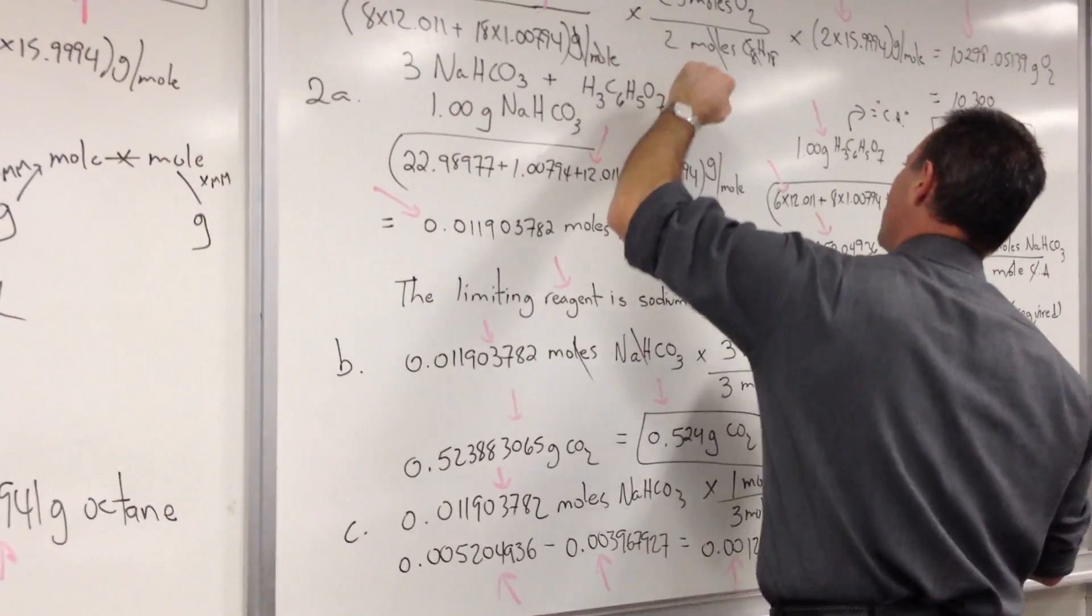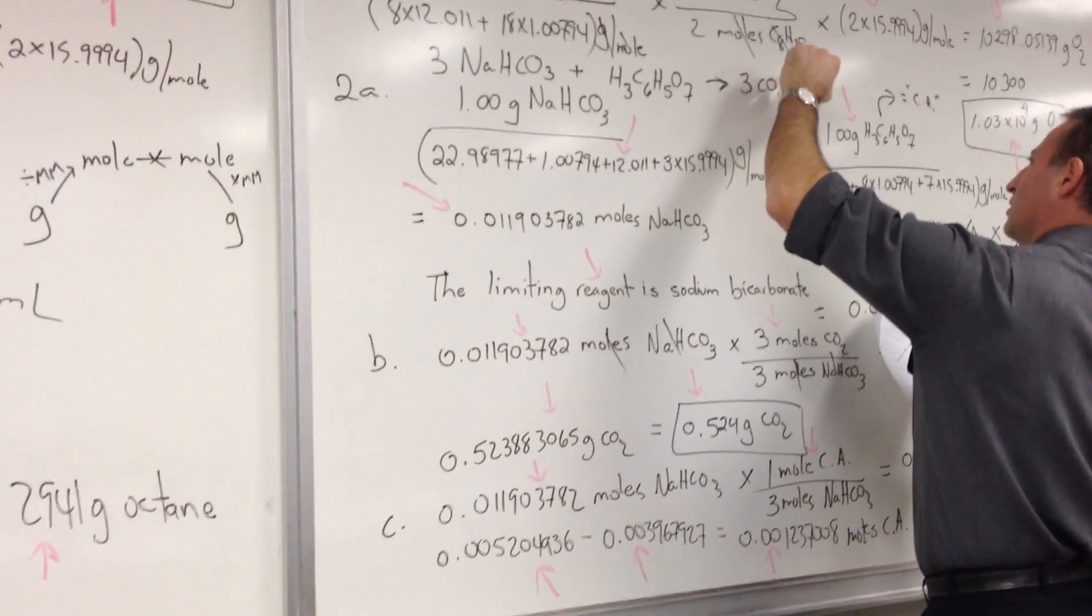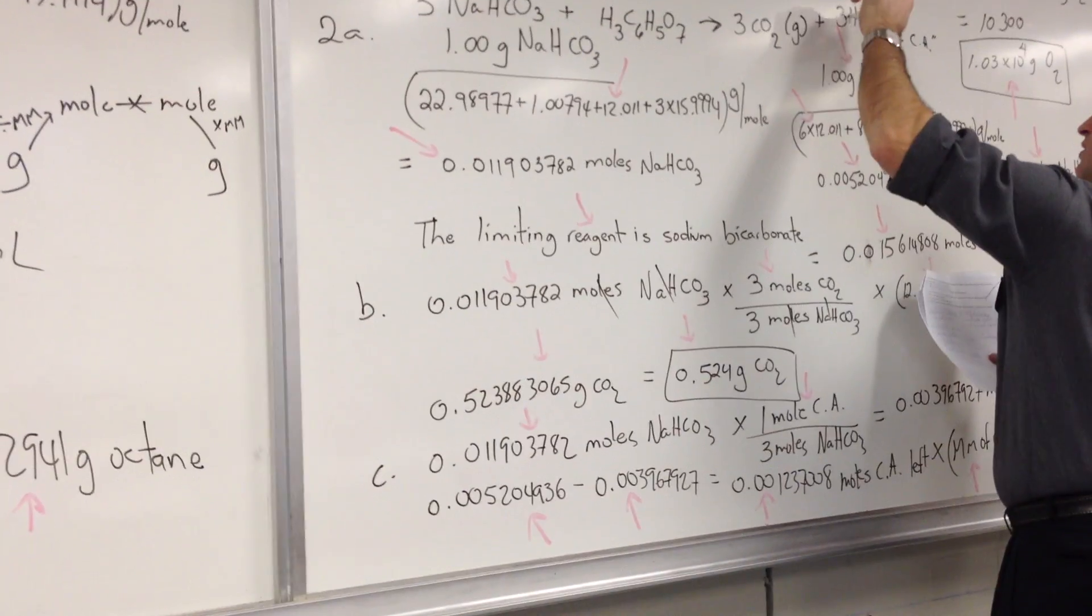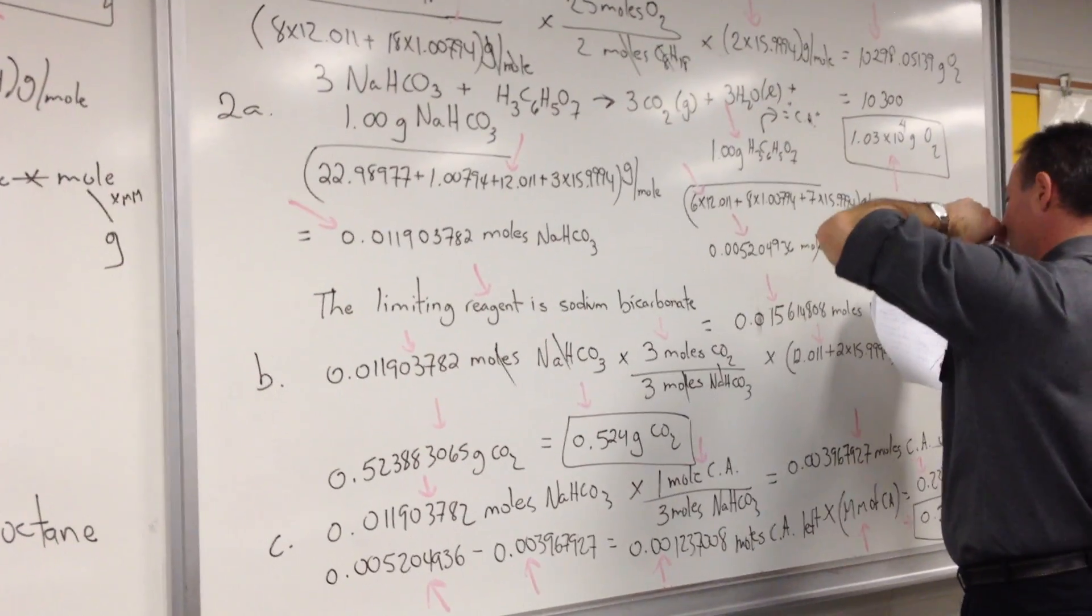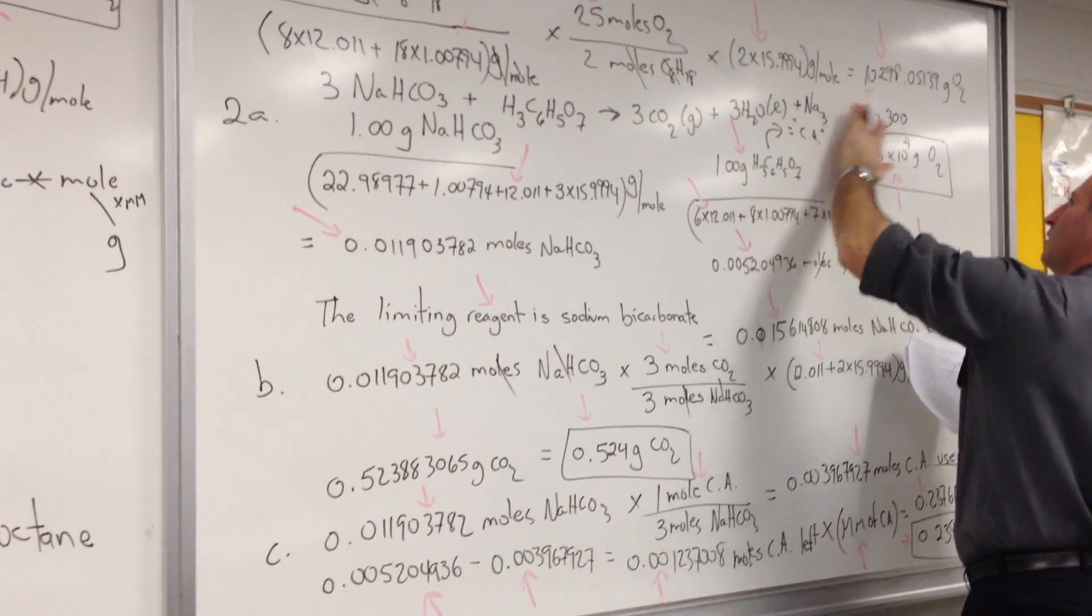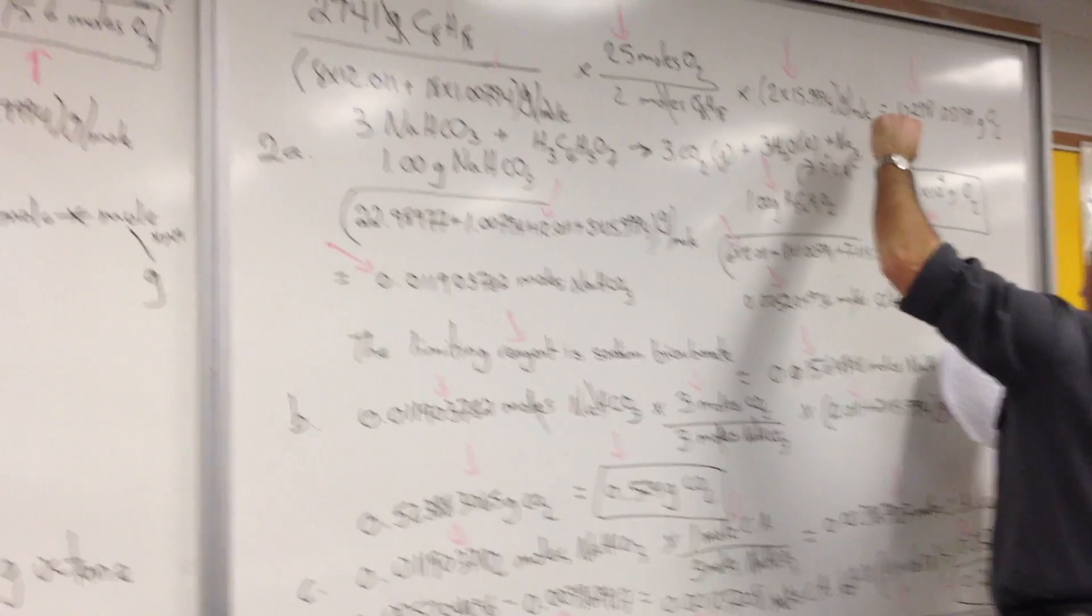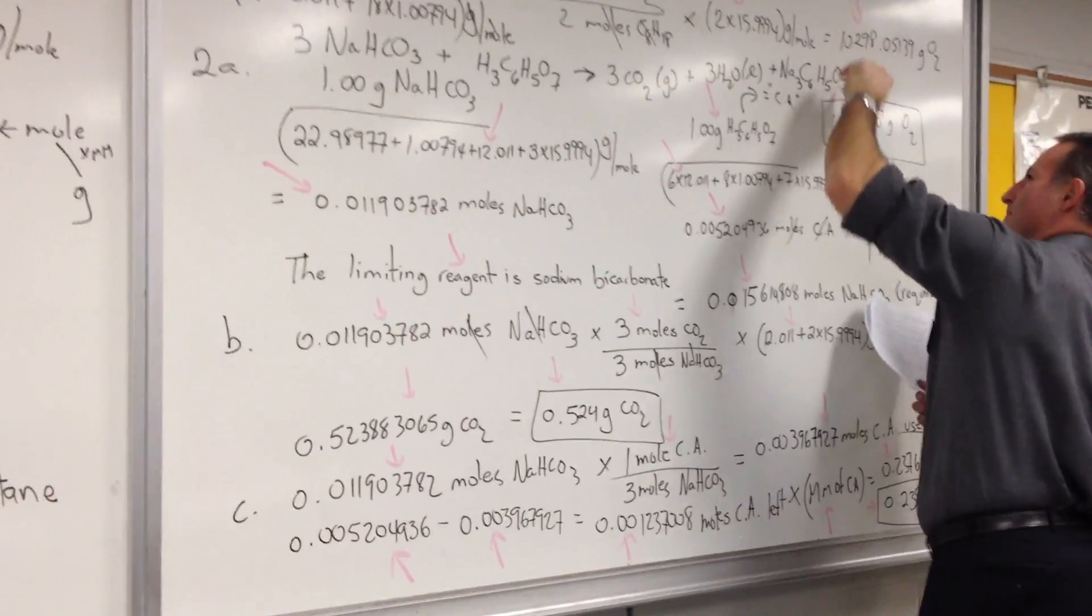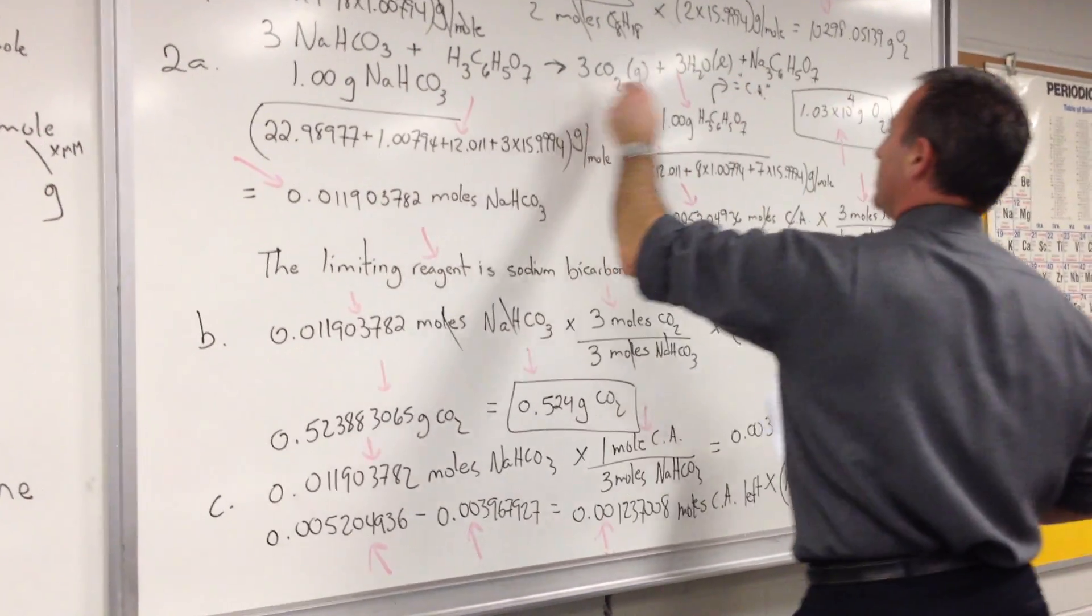The balanced equation requires three moles of sodium hydrogen carbonate to react with one mole of citric acid to form three moles of sodium carbonate, three moles of CO2 plus three moles of water. Apologize for the crowding. And one mole of citric acid. Sodium citrate, sorry.